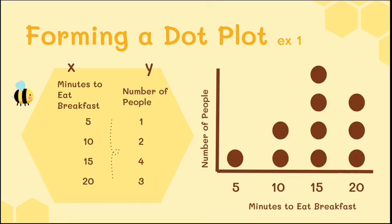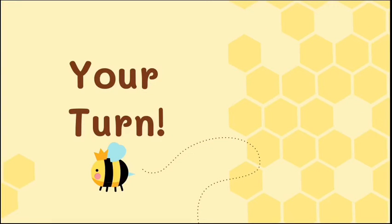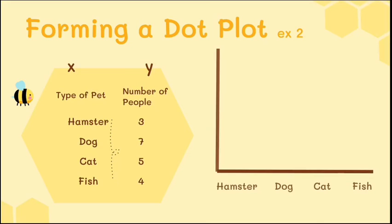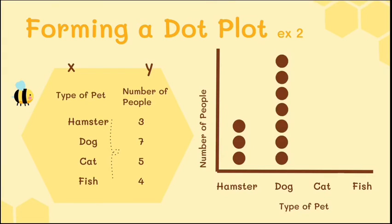Now you can try this one. The x-axis and y-axis are provided — go ahead and try to draw your own graph. The answer would show hamster, dog, cat, and fish on the x-axis as type of pet, and number of people on the y-axis. 3 people have a hamster, so draw 3 dots. There are 7 people with dogs, so 7 dots. 5 people have cats, so 5 dots. And 4 people have fish, so 4 dots. Draw one dot for each person.